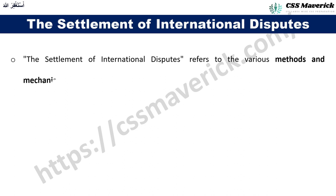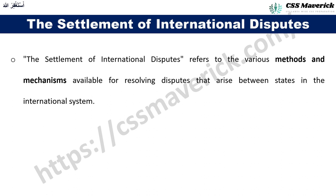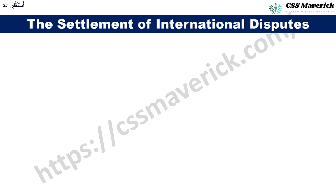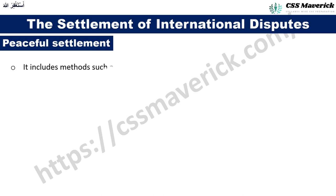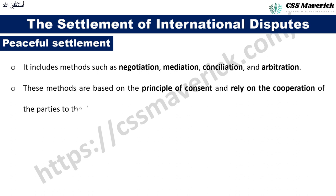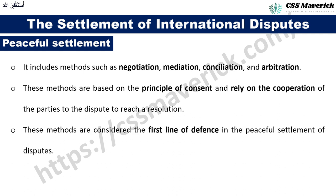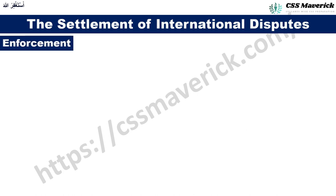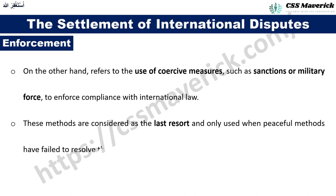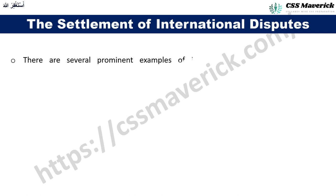The settlement of international disputes refers to the various methods and mechanisms available for resolving disputes that arise between states in the international system. The methods can be divided into two main categories: peaceful settlement and enforcement. Peaceful settlement includes methods such as negotiation, mediation, conciliation, and arbitration, based on the principle of consent and cooperation of the parties. Enforcement refers to the use of coercive measures such as sanctions or military force, considered a last resort only when peaceful methods have failed.